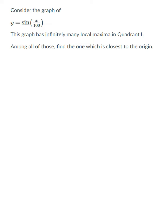So before I graph the sine of x over 100 and analyze that, let's just remind ourselves what the graph of the sine of x looks like. The sine of x has a period of 2 pi, therefore this intercept is 2 pi.